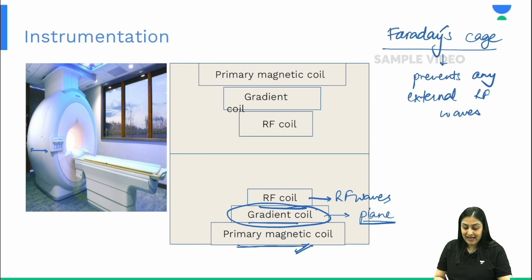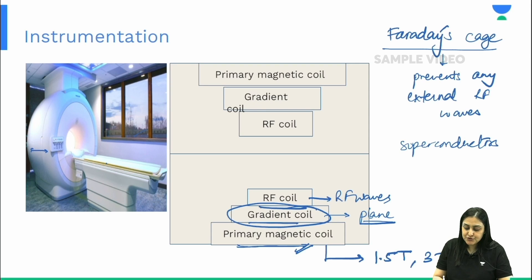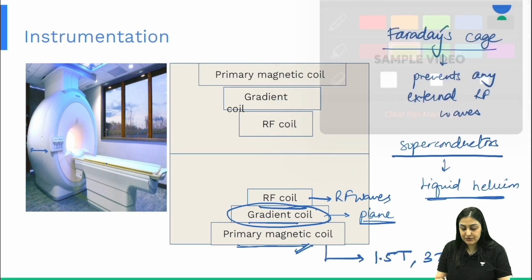To achieve such high magnetic strengths — MRI machines come in strengths of 1.5 Tesla, 3 Tesla, and up to 7 Tesla for research purposes — we need superconductors. For superconductors to function, very low temperatures must be maintained, which is achieved by circulating liquid helium. So two important components of the MRI machine to remember are the Faraday's cage and liquid helium.